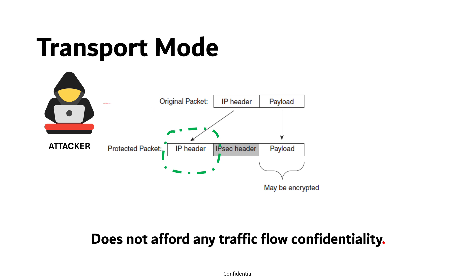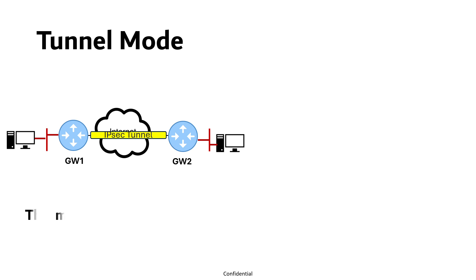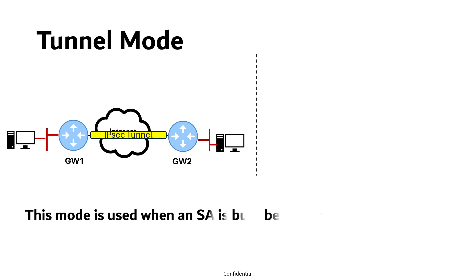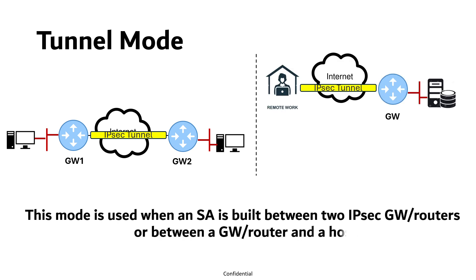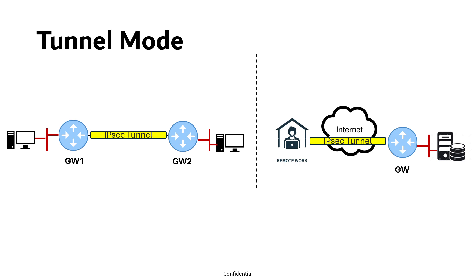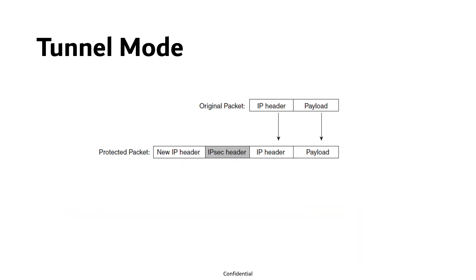So an attacker could use this data to determine where the servers are located. Tunnel mode is used when a security association is built between two IPsec gateways or routers, or between a gateway/router and a host — for example, site-to-site VPN or remote access VPN. In this mode, the entire IP packet is protected.